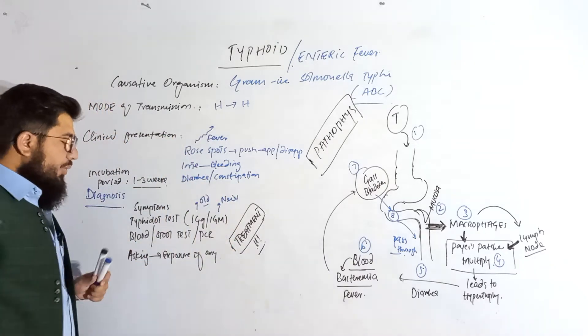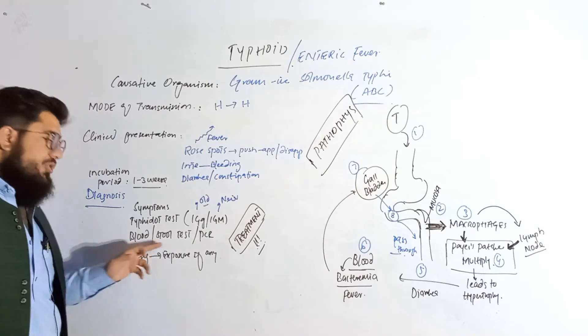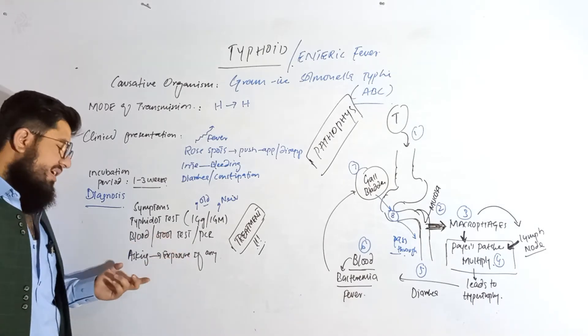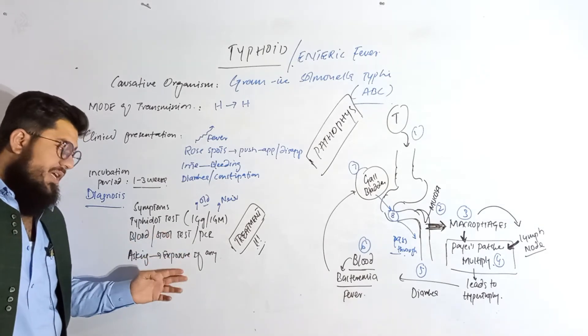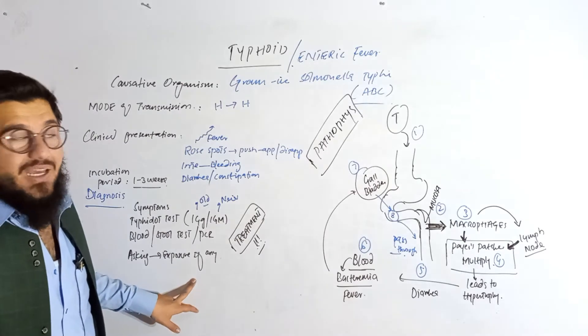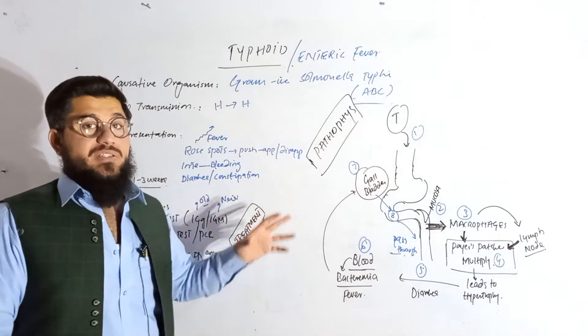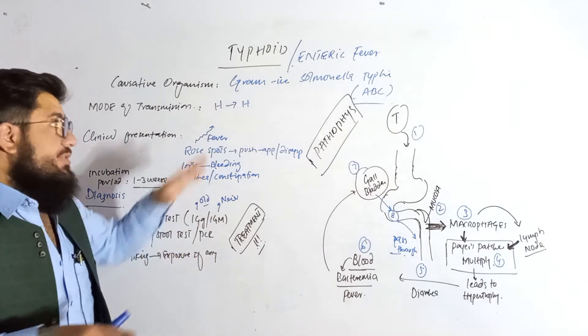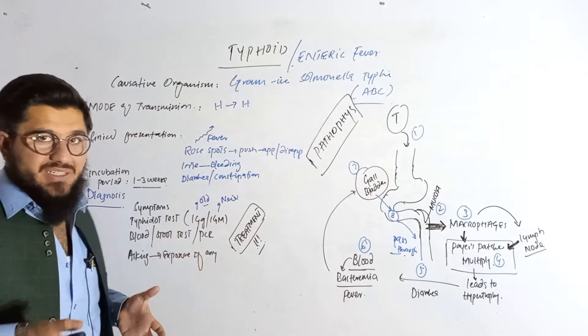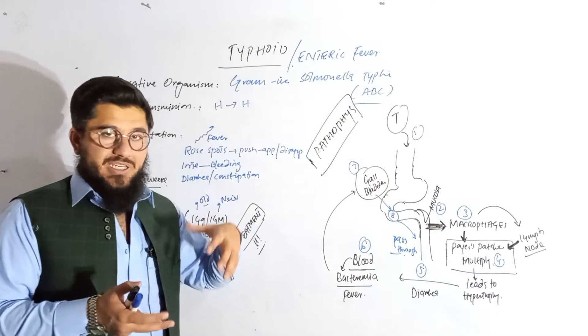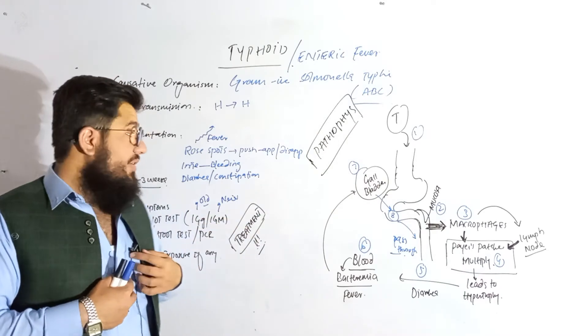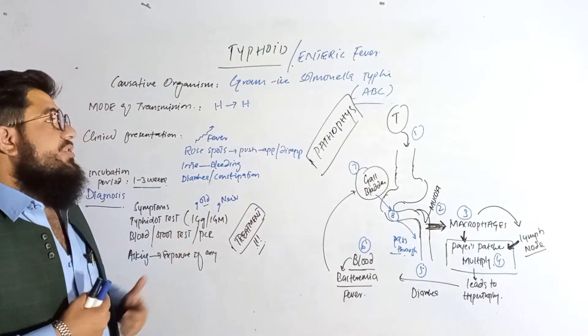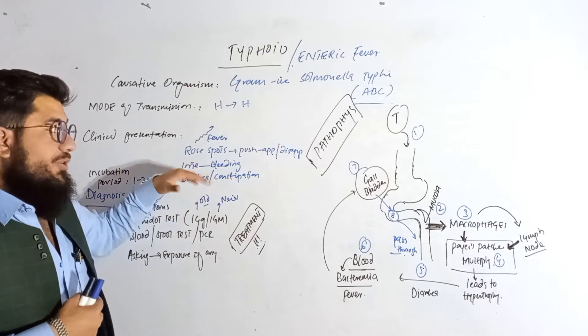We can also go through the blood testing, stool tests, and thereby PCR. We can ask whether the person has been exposed to an area where there was actually this particular disease available or there was prevalence of this particular disease. So if a person is exposed to such area, there are chances that the person will get infected with that particular disease.